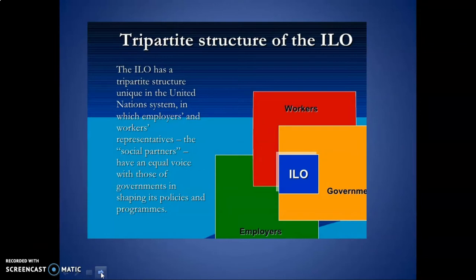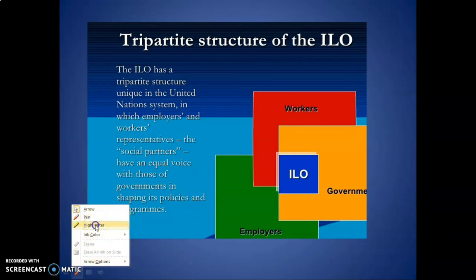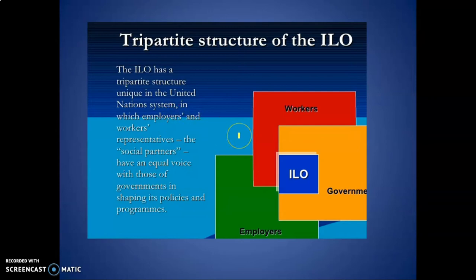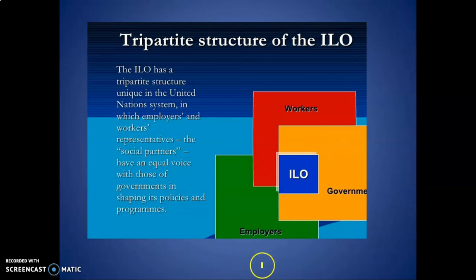ILO has a tripartite structure, meaning it is composed of three parties: workers, governments, and employers. Employers and workers are the representatives and social partners who have an equal voice with those of government in shaping its policies and programs.